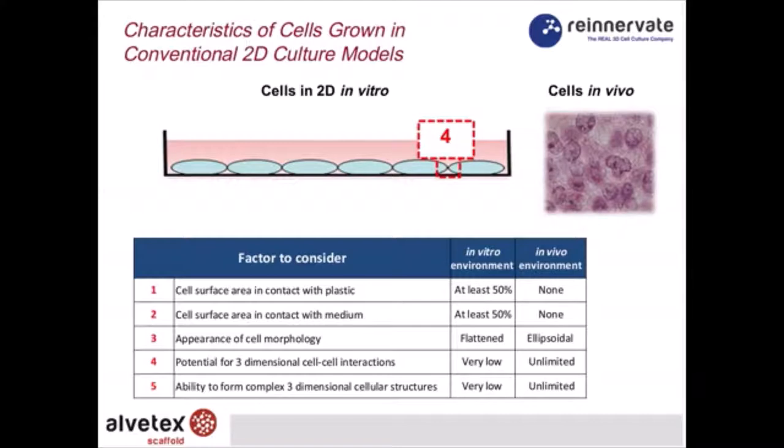This is important because there are many situations in different cell types during development, disease, and normal function whereby cells need to communicate directly with their neighbors. If that interaction is reduced, as it is in 2D culture, those mechanisms will not function in the same way. And of course, complex structures as occur in vivo cannot be produced in conventional 2D culture.